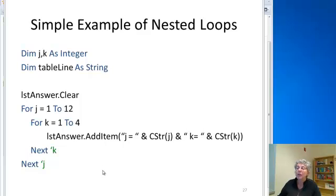So here's an example, and this one's really simple, and it just prints j and k. So my outer loop has j going from 1 to 12, and my inner loop has k going from 1 to 4. So when I do j equals 1, I'll do j equals 1, k equals 1, j1, k2, j1, k3, j1, k4. That finishes this loop.